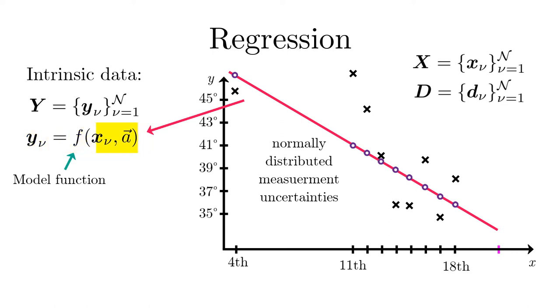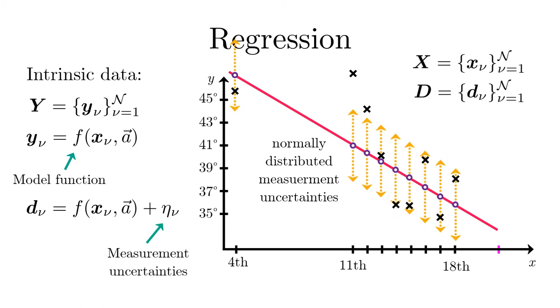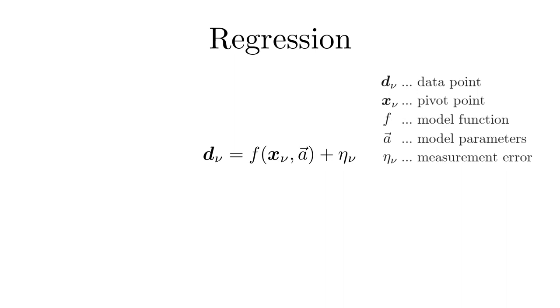That depends on some parameters. Then the measured data can be described by adding the measurement uncertainty to the deterministic model function. Now the goals of regression are two-fold.